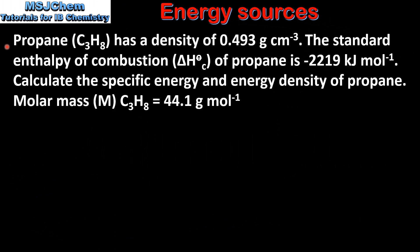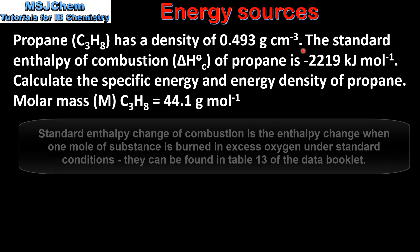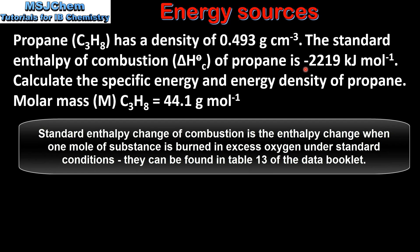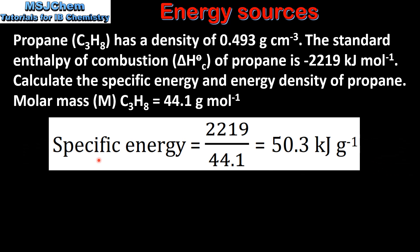Let's look at an example. Propane, which is C3H8, has a density of 0.493 grams per cm³. The standard enthalpy of combustion of propane is negative 2,219 kJ per mole. Calculate the specific energy and energy density of propane. The molar mass of propane is 44.1 grams per mole. Specific energy is equal to the energy released by the fuel, which is the same as the enthalpy change of combustion value, divided by the mass of fuel, which is the same as the molar mass.